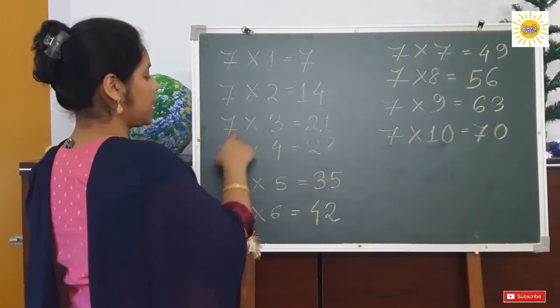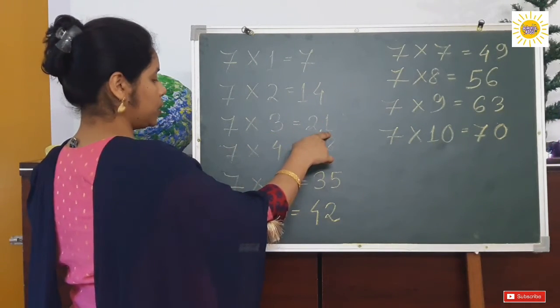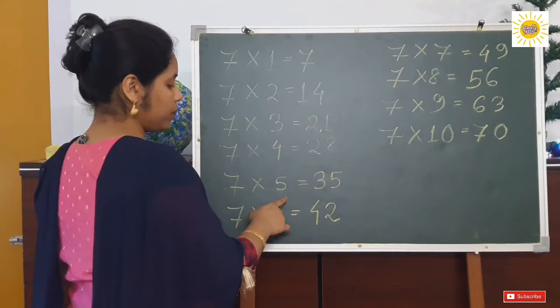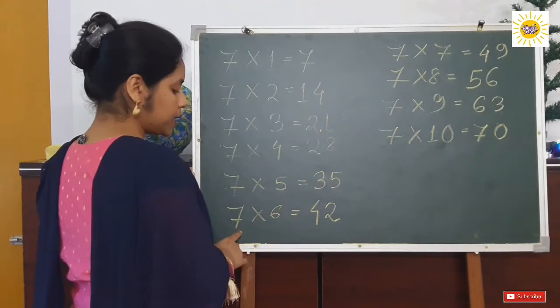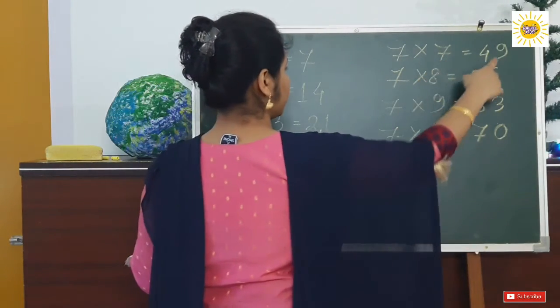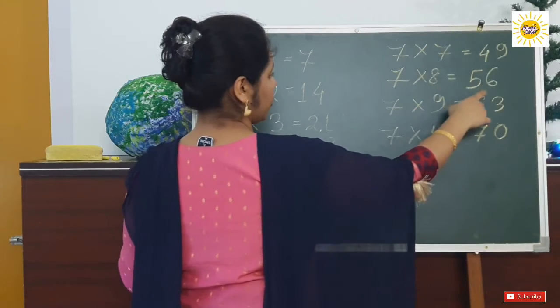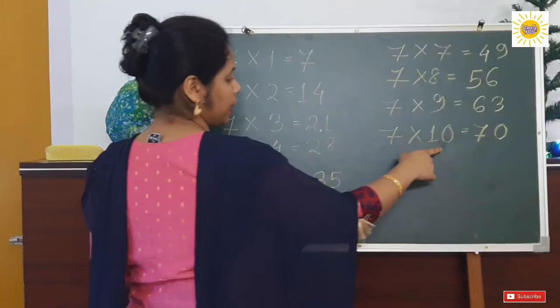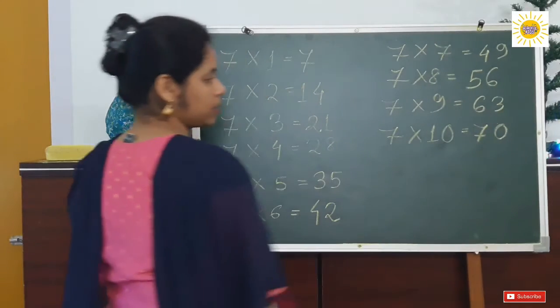7 sixes are 42. 7 sevens are 49. 7 eights are 56. 7 nines are 63, and 7 tens are 70.